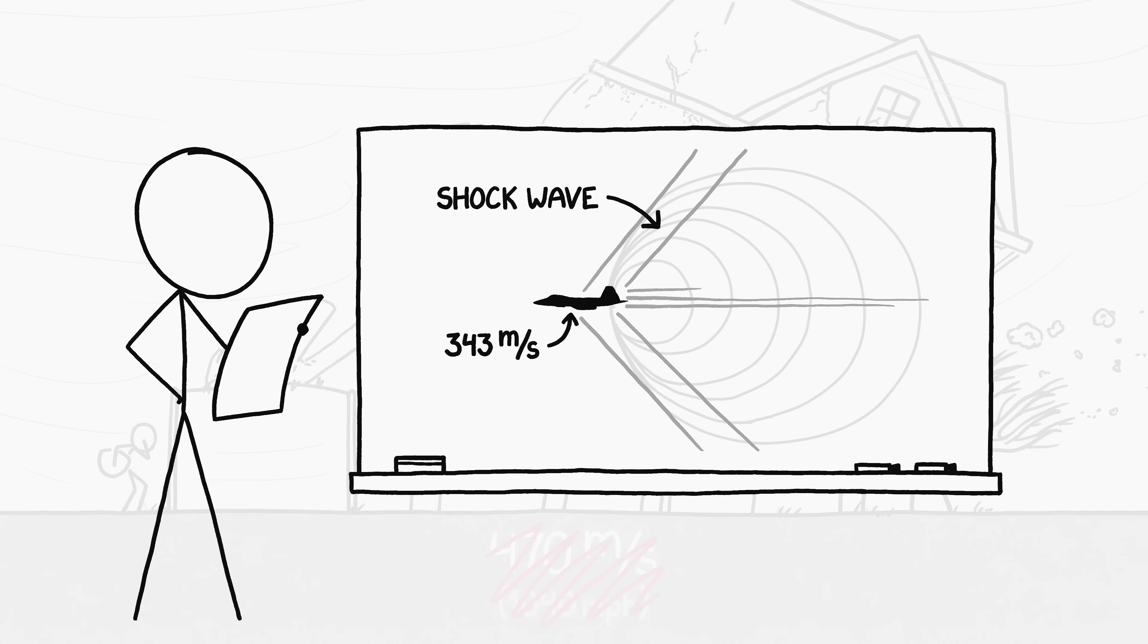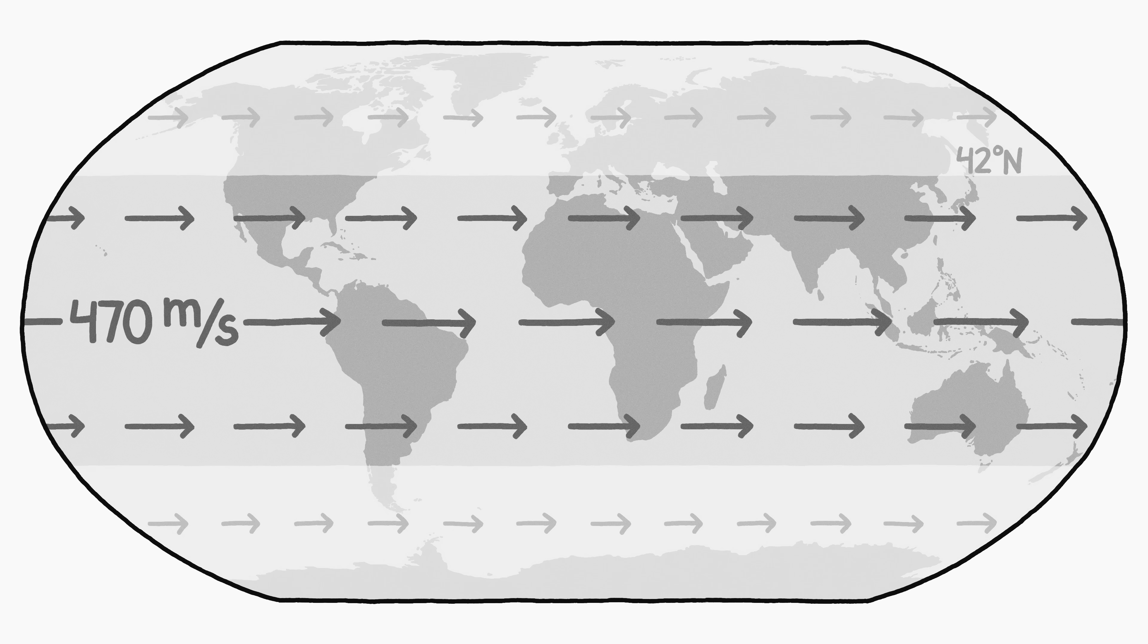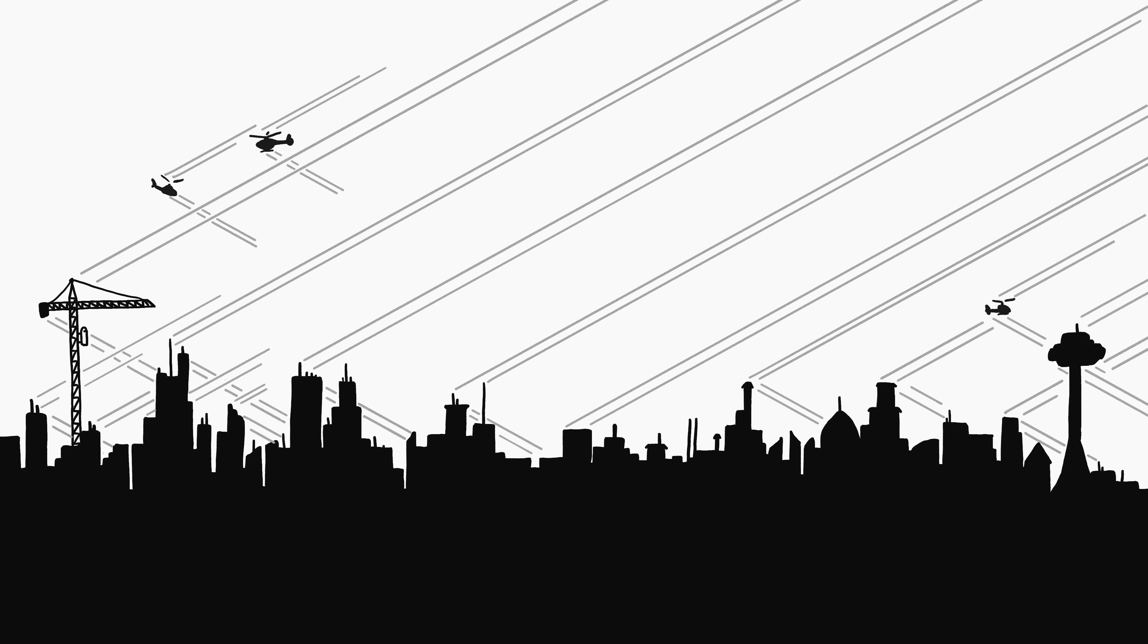For reference, supersonic speed is 343 meters per second. The wind would be highest at the equator, but everyone and everything living between 42 degrees north and 42 degrees south, which includes about 85% of the world's population, would also experience sudden supersonic winds. The high winds would only last for a few minutes near the surface before friction with the ground slowed them down.